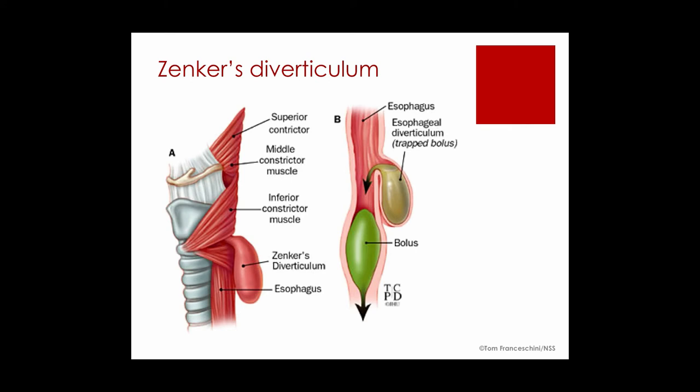A traction lateral diverticulum is typical in patients who've had abdominal or lung surgeries. The most common case is someone who's had a lobectomy for lung cancer. As the lung heals, scar tissue forms and, because of its proximity to the esophagus, it grabs onto the esophagus. As it continues to heal and pull, it sometimes gives way and the diverticulum develops. So there are traction diverticula and pulsion diverticula — pulsion being the most common.